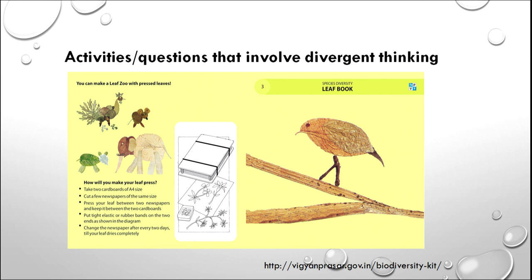There are also some activities on the website of Vigyan Prasar which are very helpful for engaging with divergent thinking. One activity talks about different leaves — there is diversity in nature, and to understand that diversity we need a kind of thinking. If leaves could be dried and pressed, those leaves could be used to make different animals. The activity engages children in thinking about which leaf could be used for making which animal, depending upon the shape of the leaf and the shape of the animal, and then creating a zoo out of it. This is one way to encourage divergent thinking.